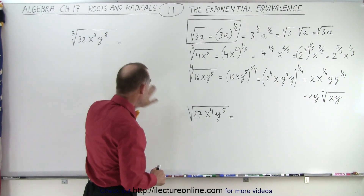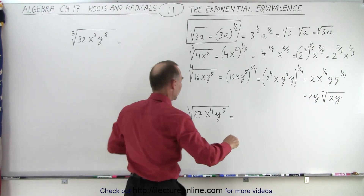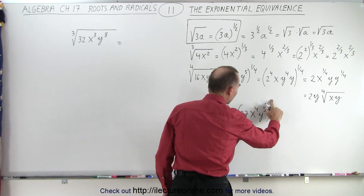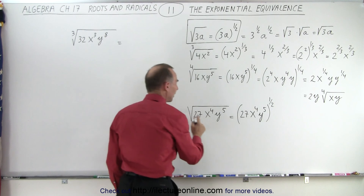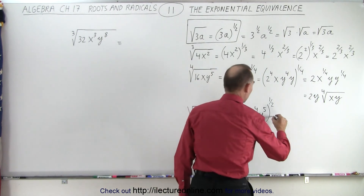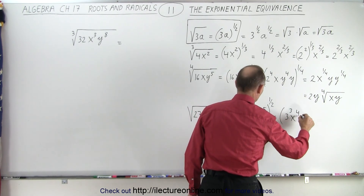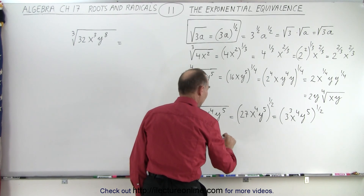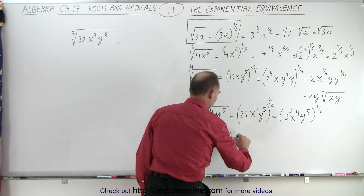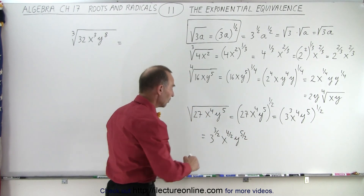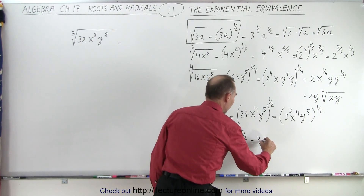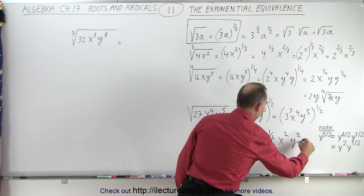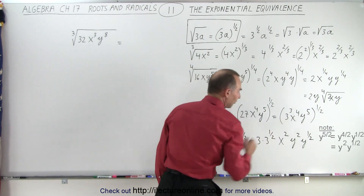Now taking a look at these two examples, let's simplify them using the same rules. This can be written as the quantity 27x⁴y⁵ raised to the one-half power, because raising something to the one-half power is the same thing as taking the square root. Now 27 can be written as 3 to the third power, so we have 3 to the third power, x to the fourth, y to the fifth, all raised to the one-half power. Applying the exponent, we get 3 to the three-halves power, x to the 4/2 power, and y to the 5/2 power. I've actually separated the whole exponent from the fractional exponent.